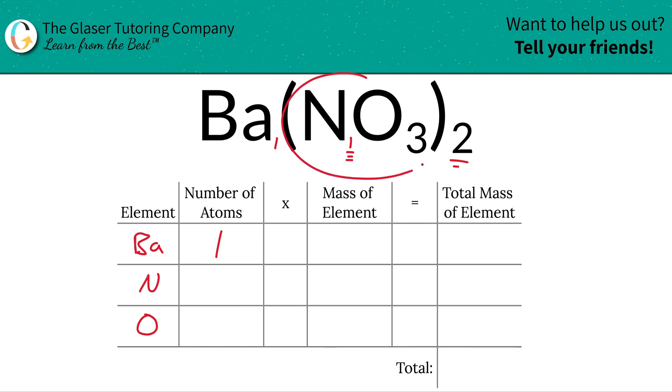So if in every one nitrate there is one nitrogen but you have two nitrates, that means you have two nitrogens in total. In other words, just take the subscript of nitrogen and multiply it by the subscript of the overall polyatomic ion. So simply, same exact concept for oxygen.